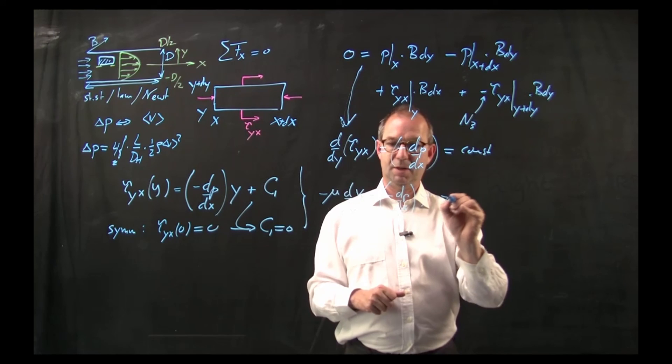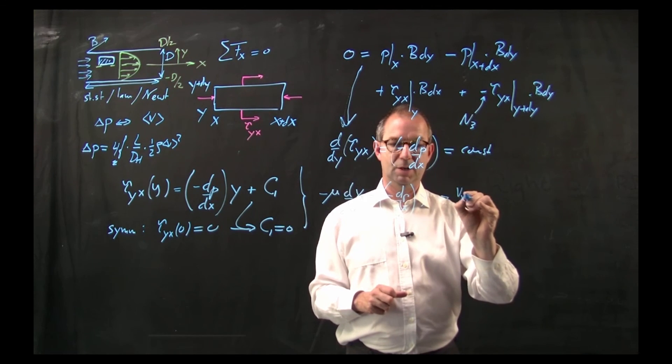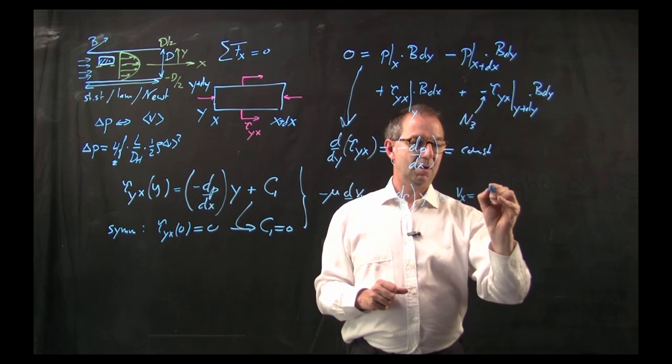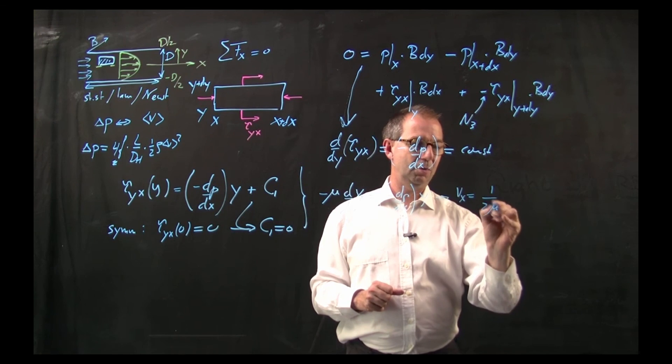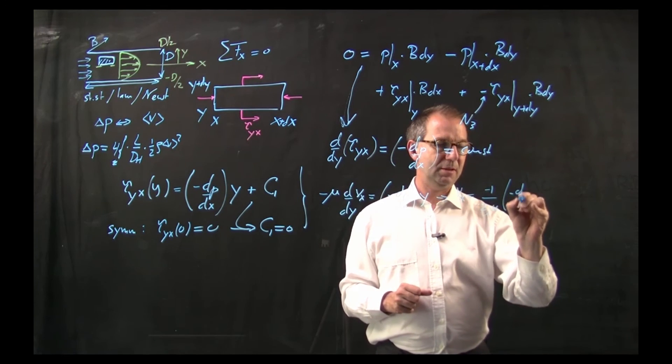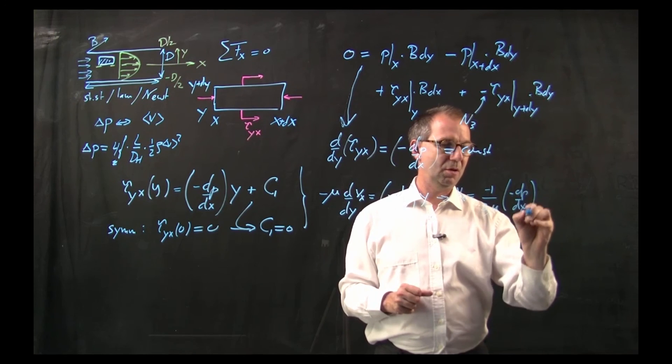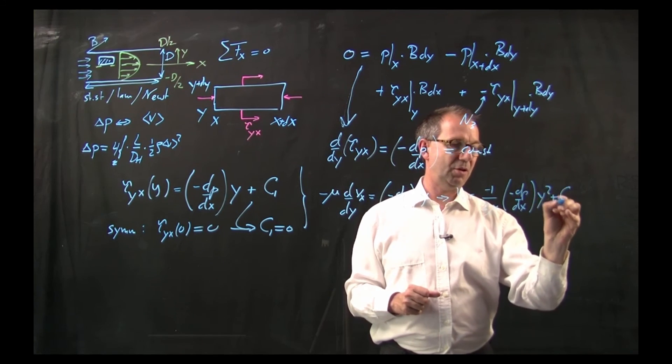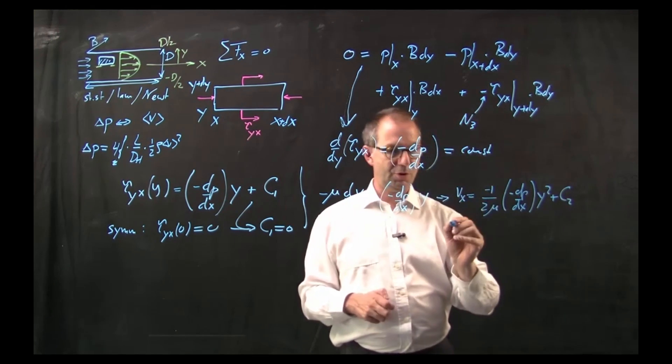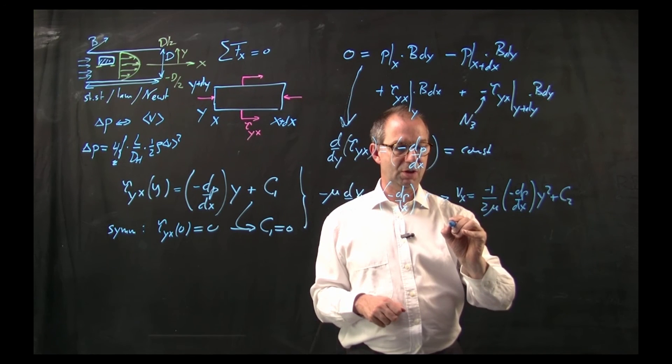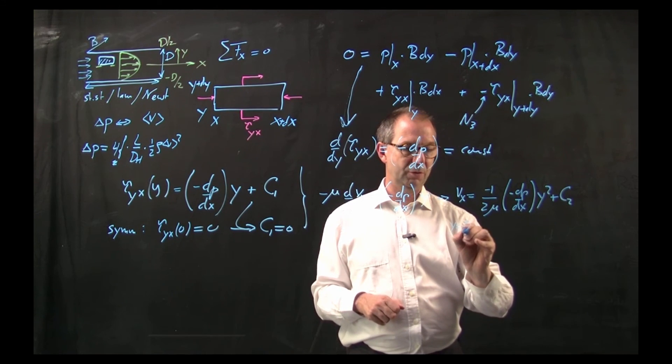Integrate this one and find that Vx equals 1 over 2 mu and a minus, minus dp/dx, y squared plus another constant. This last constant is found from a second boundary condition at y equals d over 2.